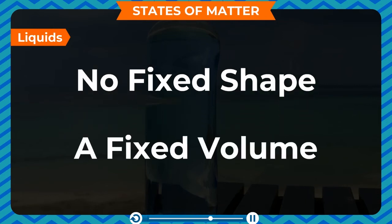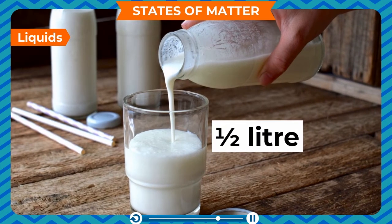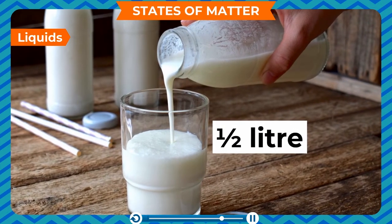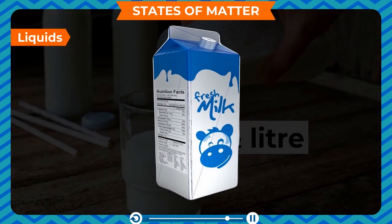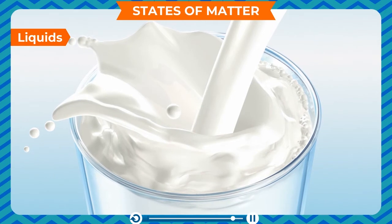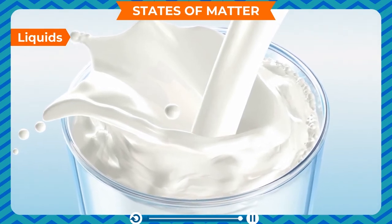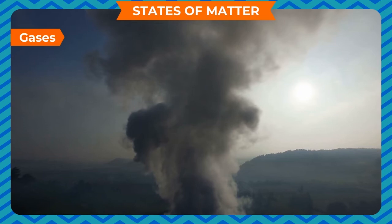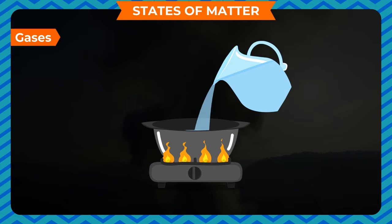This is why liquids have no fixed shape, even though they have a fixed volume. For example, half a liter of milk will be half a liter whether it is in a bottle, a packet, or a glass. Liquids can flow easily and take the shape of the container they are poured into.